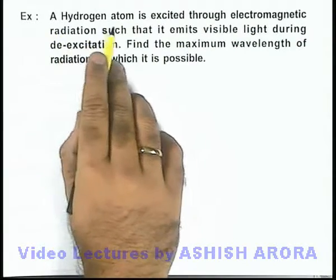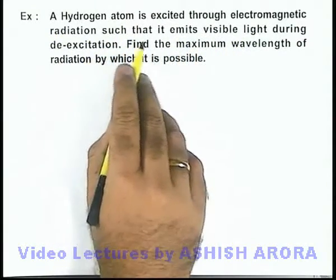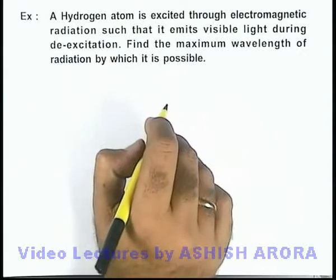In this example we are given that a hydrogen atom is excited through electromagnetic radiation such that it emits visible light during de-excitation, and we are required to find the maximum wavelength of radiation by which it is possible.